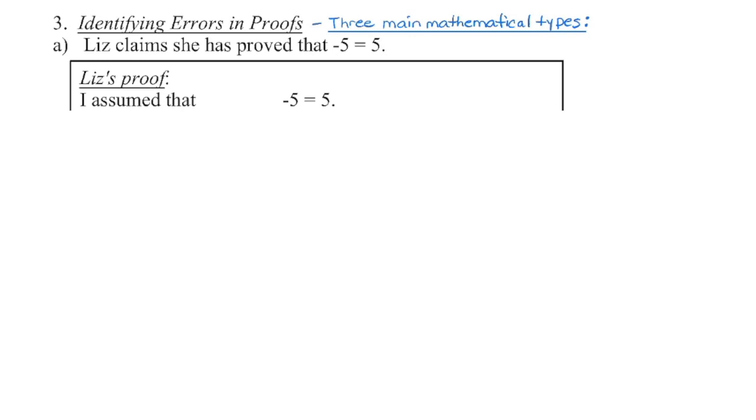That's not true. So every statement that follows is going to be built on something that's not true. So at this point, it doesn't matter what she puts down after. Everything else is incorrect. Her argument is invalid. The first type of mistake you can make in a mathematical proof is to begin with what we call an invalid initial assumption.